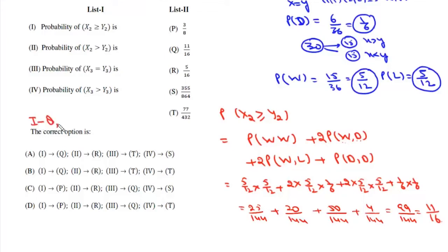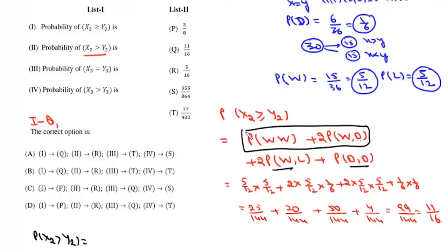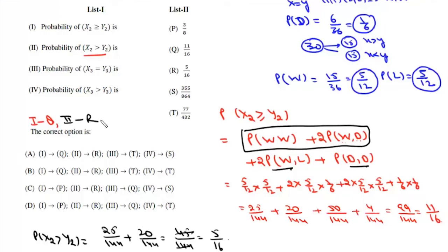The second probability is P(X2 > Y2). For X2 > Y2, we remove the equal-score cases from the previous result, leaving only win-win and win-draw or draw-win cases: 25/144 + 20/144 = 45/144 = 5/16. This second probability matches R.